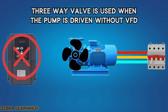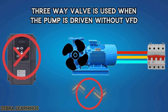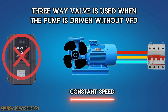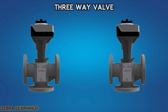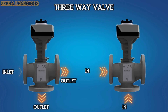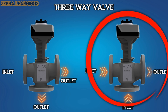If the pumps are driven directly by electricity, the speed of the pump cannot be increased or decreased — it runs at constant speed only. There are 2 types of 3-way valve: one is a valve with 1 inlet and 2 outlets, and the other is a valve with 2 inlets and 1 outlet. But in AHU, the valve with 2 inlets and 1 outlet is used.